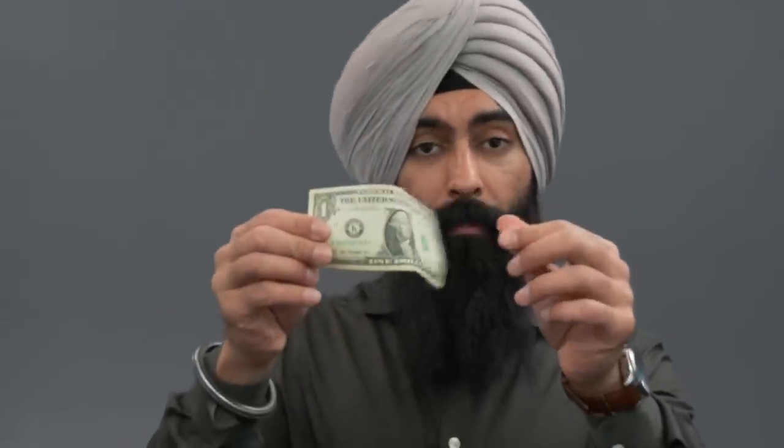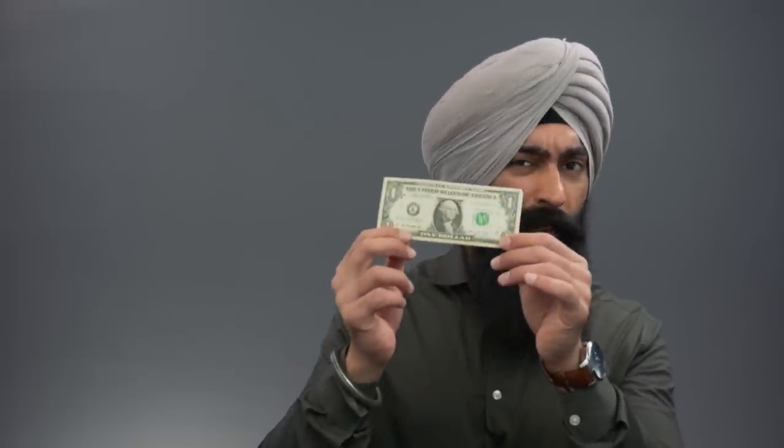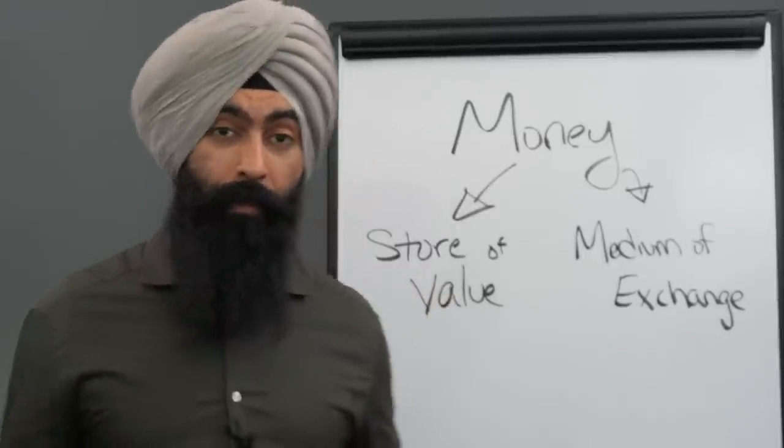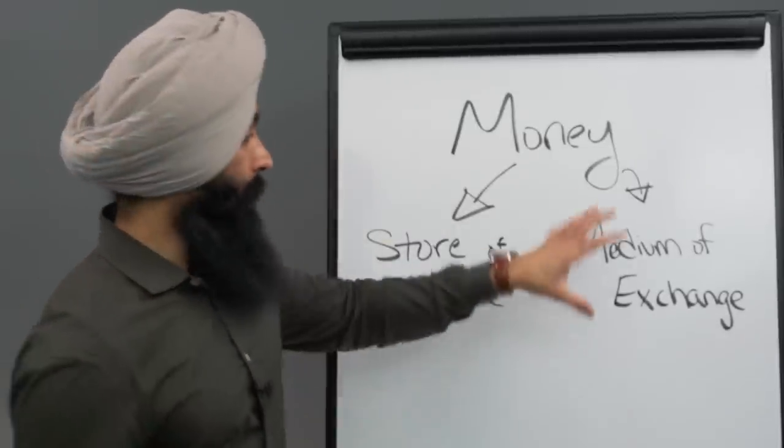And up until pretty much now, they never really cared about holding that much gold because this was our money and currency. But it wasn't always like that. Before the early 1970s, this was just our currency. It wasn't our money. Let me explain what I mean. Money has two primary purposes. One is to be a store of value, and second is to be a medium of exchange.